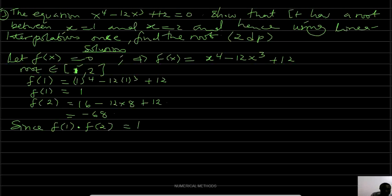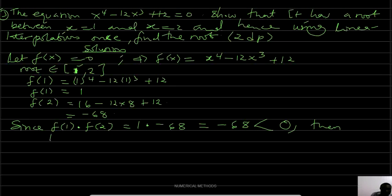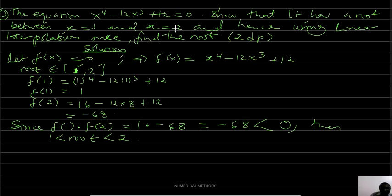f(2) = -68. By sign change, f(1) × f(2) = 1 × (-68) = -68, which is less than 0. Therefore there is a root between 1 and 2, and Part A is shown.